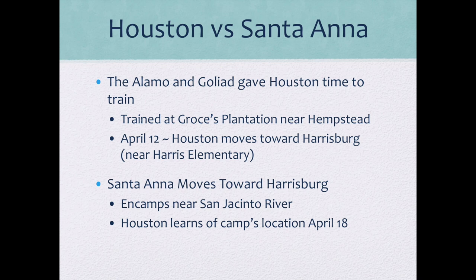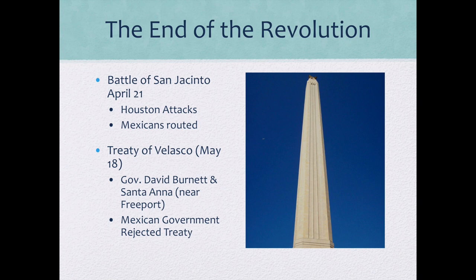The troops trained around Hempstead at Groce's Plantation, then started moving toward Harrisburg in south Houston around April the 12th to prepare for battle. Houston wanted to draw Santa Ana further east, hoping U.S. forces might intervene and that Santa Ana would stretch his supply lines. As Santa Ana took this bait and moved toward Harrisburg hoping to catch the Texan government, he encamped on the San Jacinto River. The Battle of San Jacinto took place on April the 21st — Houston attacked, the Mexicans were routed in minutes, many were killed, and Houston only lost a handful of men.